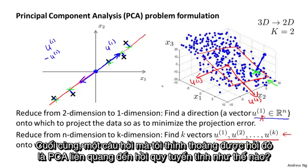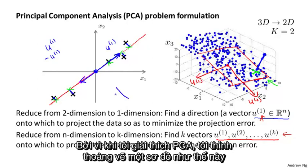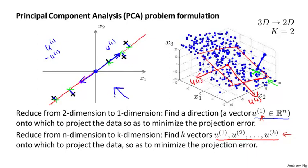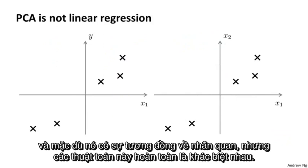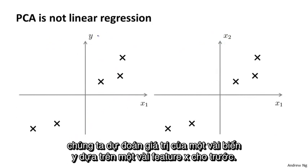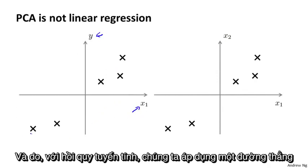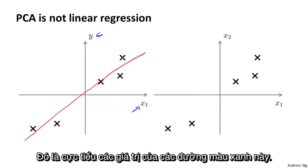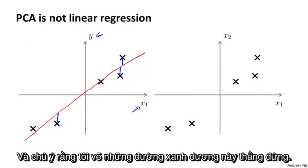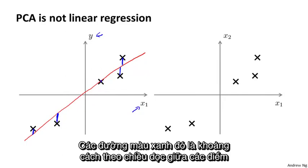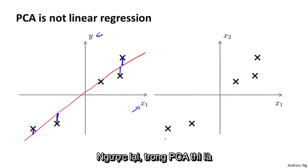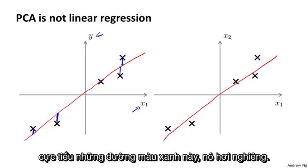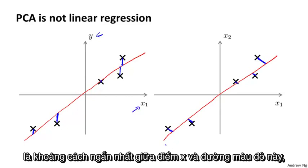One question I sometimes get asked is: how does PCA relate to linear regression? Because when explaining PCA, I sometimes draw diagrams that look a little bit like linear regression. It turns out PCA is not linear regression. Despite some cosmetic similarity, these are actually totally different algorithms. In linear regression, we're trying to predict the value of some variable y given input features x, fitting a straight line to minimize the squared error between a point and the line — those blue lines are drawn vertically. In PCA, we minimize the magnitude of lines drawn at an angle — the shortest orthogonal distances between the point x and the red line.